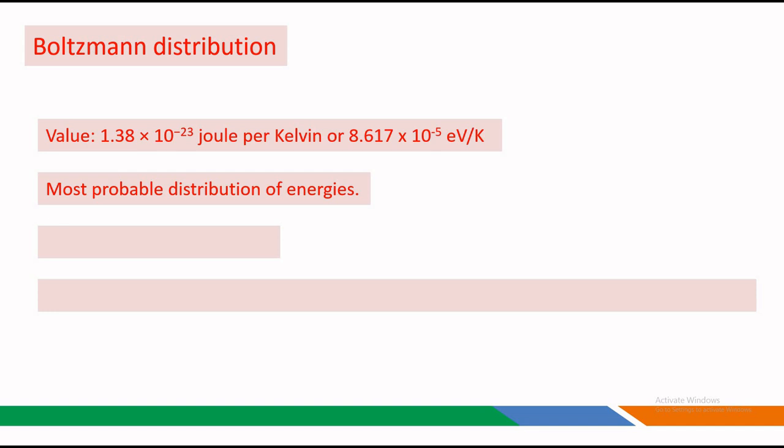The Boltzmann distribution is widely used in statistical mechanics. It is applied to understand the behavior of gases, chemical reactions, and the distribution of energies in various physical systems. It reflects the statistical nature of particles in a system, emphasizing the most probable distribution of energies.